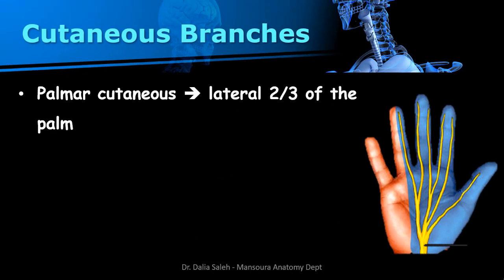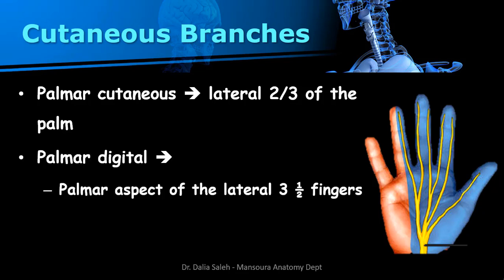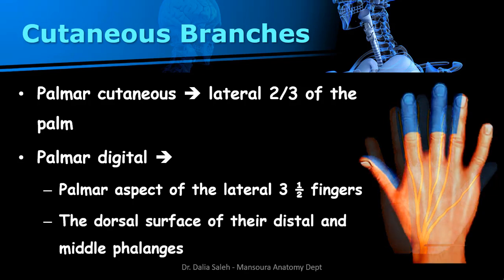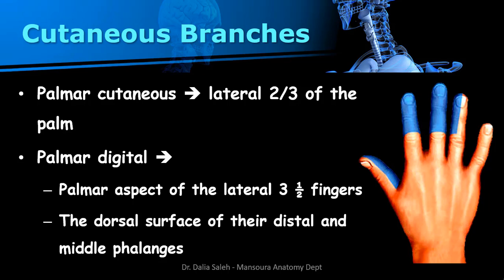The cutaneous branches of the median nerve include the palmar cutaneous nerve, which supplies the skin of the lateral two-thirds of the palm of the hand. It also gives palmar digital branches to the palmar aspect of the lateral three and a half fingers and the dorsal surface of their distal and middle phalanges.